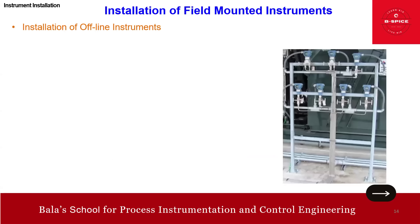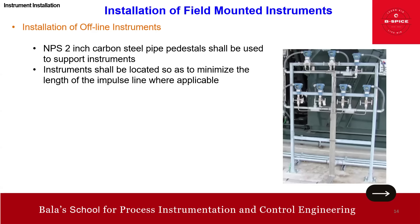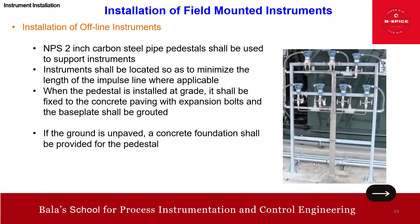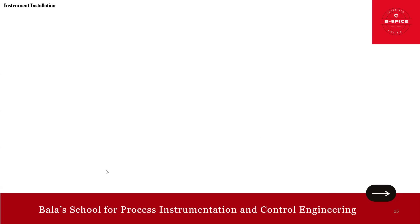For offline instruments — meaning the instrument is mounted outside with a capillary or impulse tubing — an NPS 2-inch carbon steel or galvanized iron steel pedestal shall be used to support and mount the instrument. The instrument shall be located so as to minimize the length of the impulse leg; typically 6 meters, and up to 10 meters if necessary. If the pedestal is installed on a grate it shall be fixed to the concrete paving with expansion bolts and the base plate shall be grouted. If the ground is unpaved, a concrete foundation shall be provided. Pedestals installed on platforms or process piping shall be removable and protected against rolling.